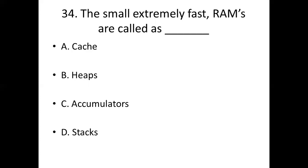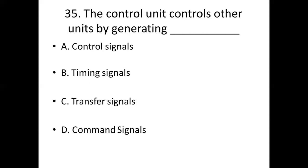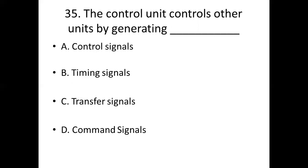Thirty-fifth bit: The control unit controls other units by generating dash. Option A: Control signals. Option B: Timing signals. Option C: Transfer signals. Option D: Command signals. Answer: Option A, Timing signals.